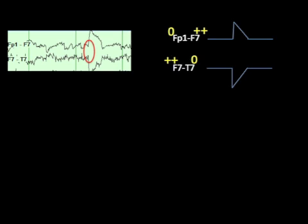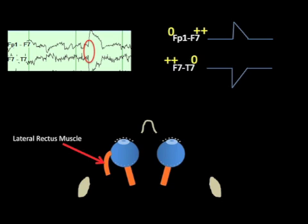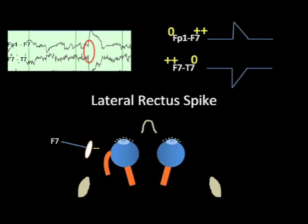There is one last detail on this particular tracing. You can see that there's a very small spiky waveform just before the eye movement. When we look at our diagram again, we remember that in order for the eyes to move to the left, the lateral rectus muscle has to contract. The lateral rectus muscle is very close to the F7 electrode, and so the initial activity before the eye movement is a small negative charge secondary to the contraction of the lateral rectus. This is known as a lateral rectus spike, and this artifact is sometimes mistaken for an epileptiform discharge.